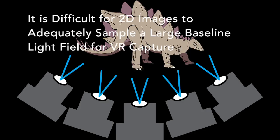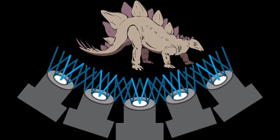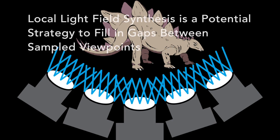Furthermore, local light field synthesis is a promising strategy for lowering the sampling rate of photographs needed to capture large baseline light fields, by filling in the gaps between images taken at discrete viewpoints. This is a first step along the path towards making light field capture for virtual and augmented reality practical.